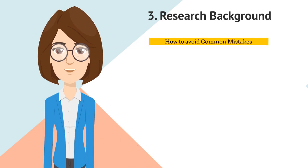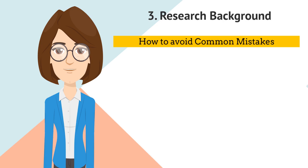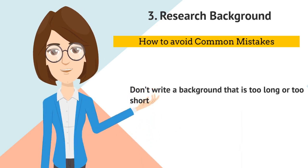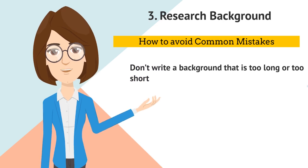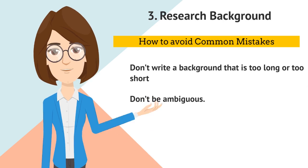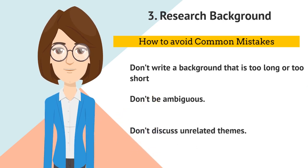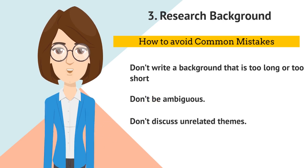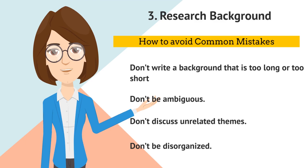While writing an effective background, steer clear of common mistakes. Don't write a background that is too long or too short — focus on including all important details but write concisely. Don't be ambiguous; express yourself keeping in mind that the reader does not know your research intimately. Don't discuss unrelated themes — highlight the gaps in the literature and state the novelty of the study. Don't be disorganized — discuss themes in a chronological manner so the reader can follow progress in the field.